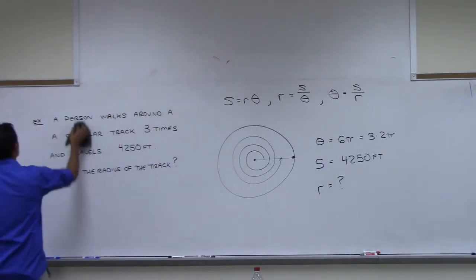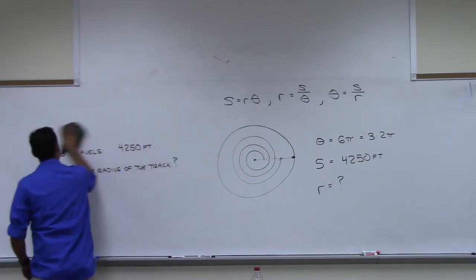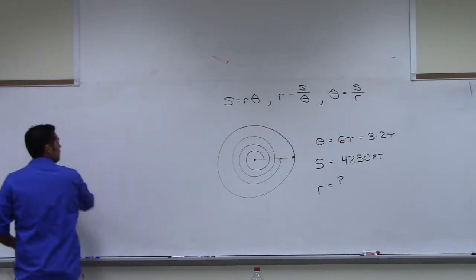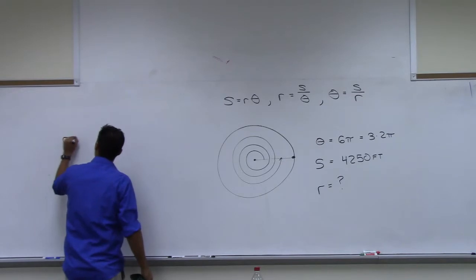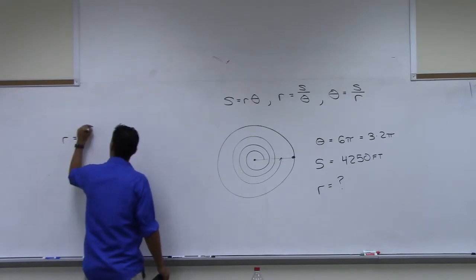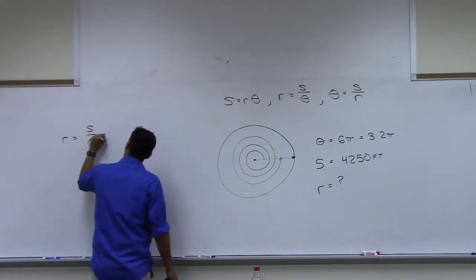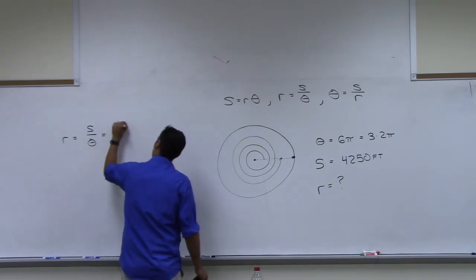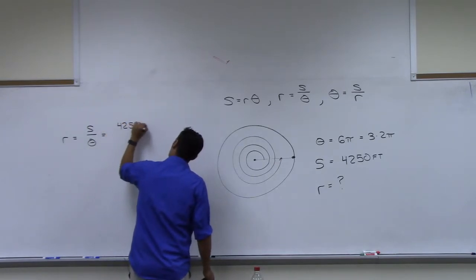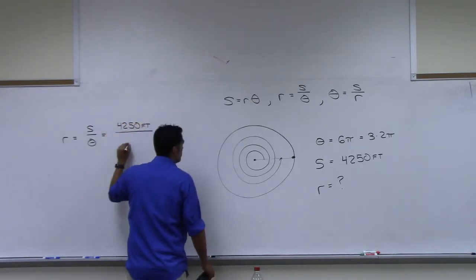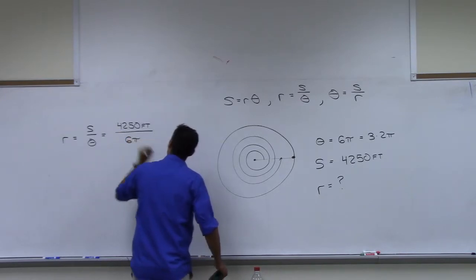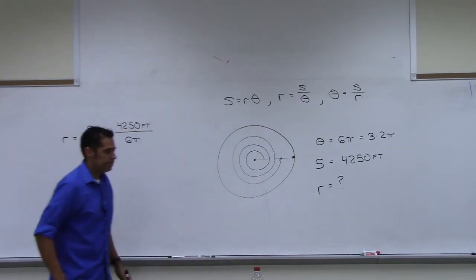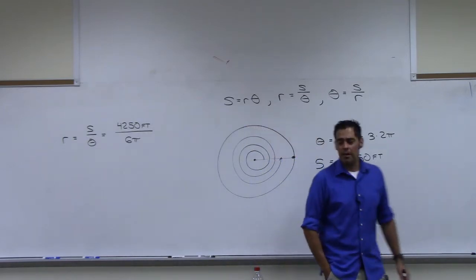So what's the radius? We're going to have to do R is equal to S over theta. S was 4,250 feet. And the theta was 6 pi. So we're going to need a calculator now.